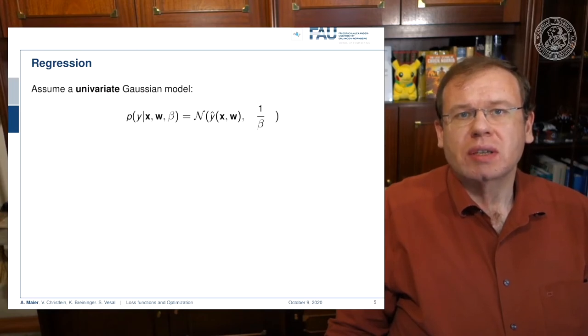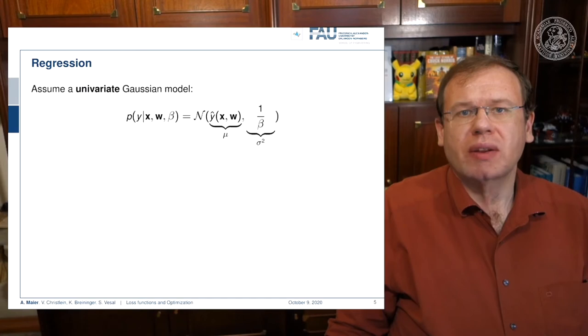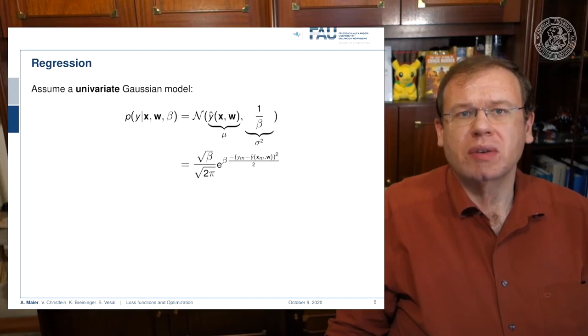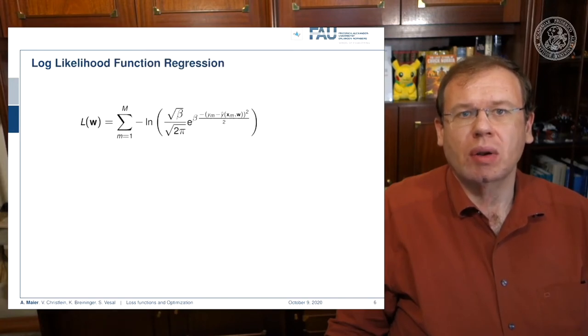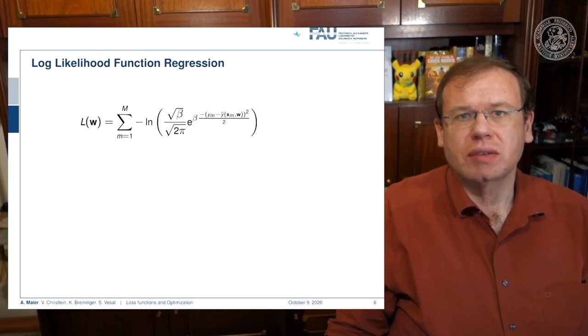Now we can look at the univariate Gaussian model. We are in the one-dimensional domain and can model this with a normal distribution where we choose the output of our network as the expected value and 1 over beta as the standard deviation. We can find the following formulation: square root of beta over square root of 2 pi times the exponential function of minus beta times the label minus the prediction to the power of 2 divided by 2. Let's put this in our log likelihood function. This is really something you should know in the written exam - everybody needs to be able to convert this univariate Gaussian distribution into a loss function.